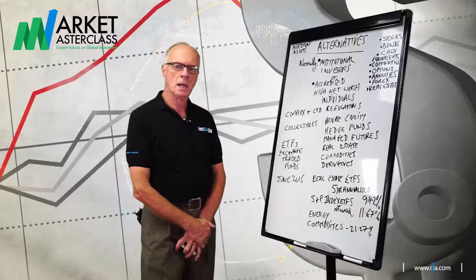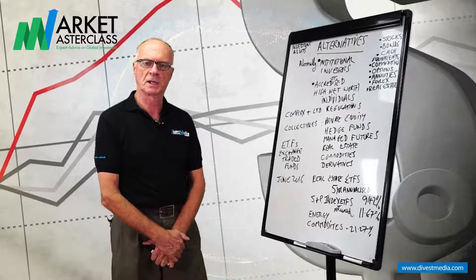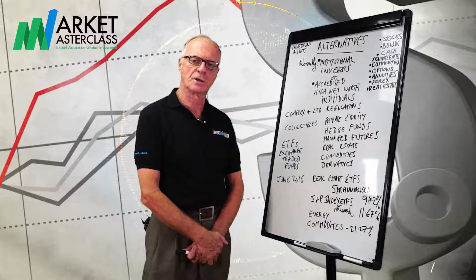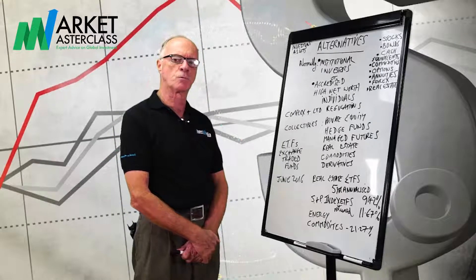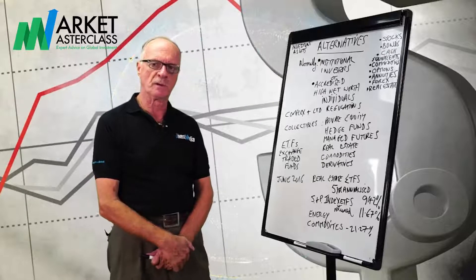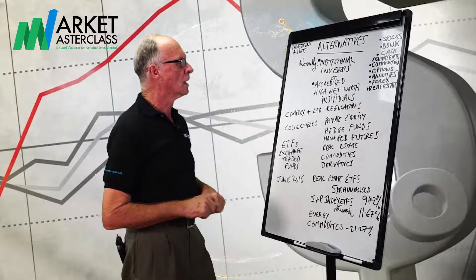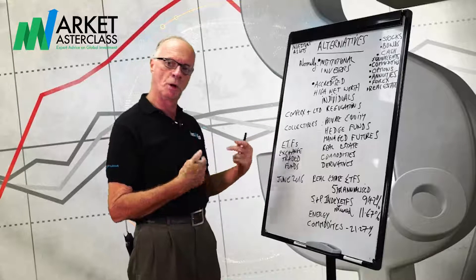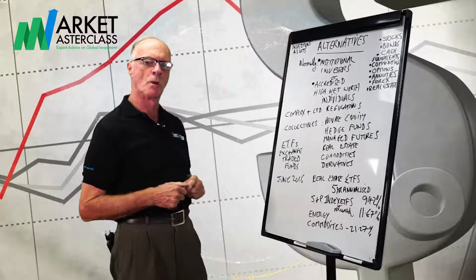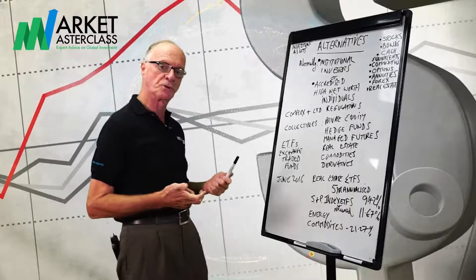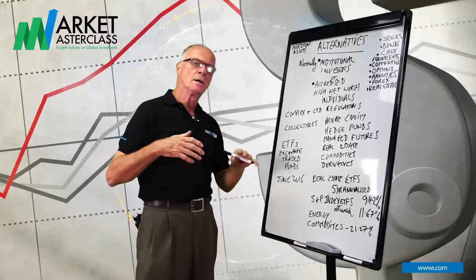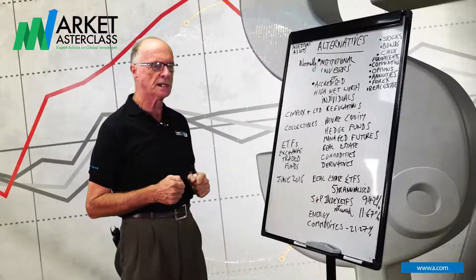Hello everybody, welcome to Market Masterclass. We're doing investment asset types, and this one is alternatives. We've covered already in other sessions stocks, bonds, cash equivalents, commodities, options, annuities, forex, and real estate. Now, the alternatives.